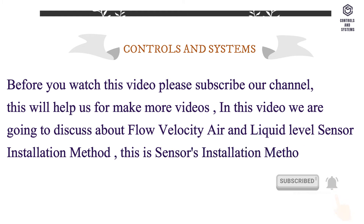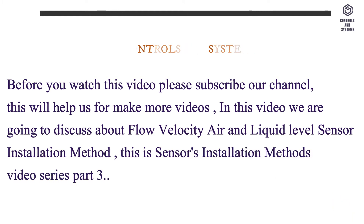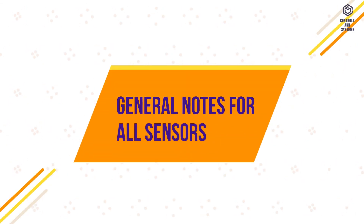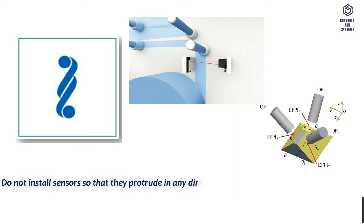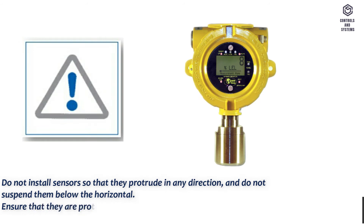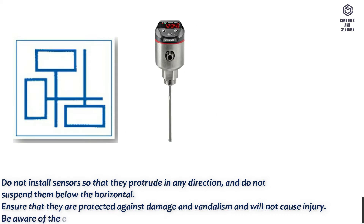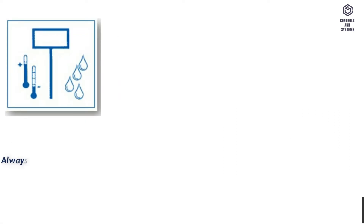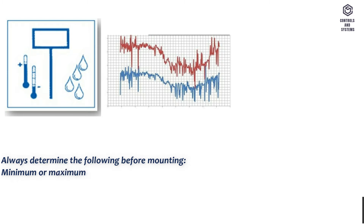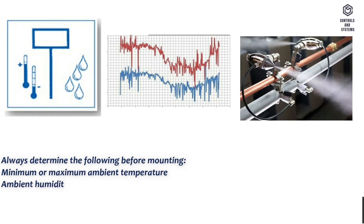This is sensors installation methods video series, Part 3: general notes for all sensors. Do not install sensors so that they protrude in any direction, and do not suspend them below the horizontal. Ensure that they are protected against damage and vandalism and will not cause injury. Be aware of the effects of orientation on the functioning of the sensor.